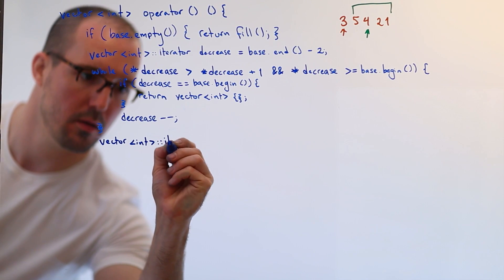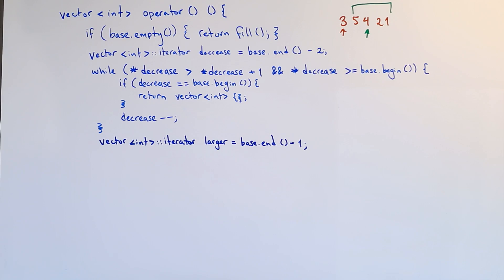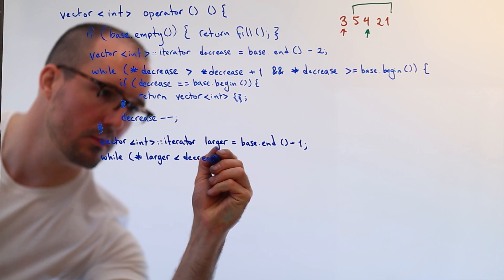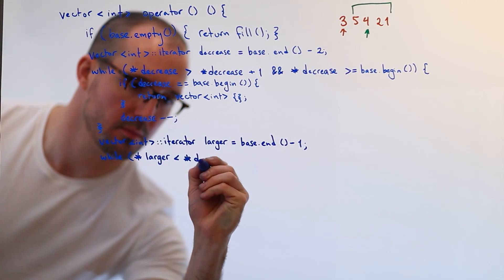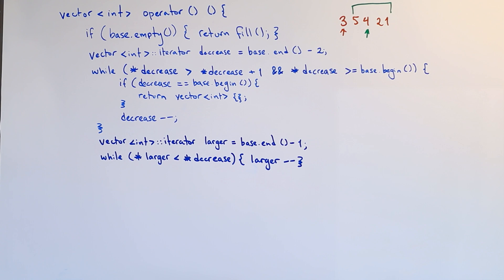So we'll start at the very right edge of the vector and we'll come leftwards. If you remember, the numbers in the tail are going to be in descending sorted order. So if we come from the right side, as soon as we find a number that's bigger, that's our winner. Because any number that's to the left of that number is going to be bigger than that number, which would mean that we would skip numbers in generating the next increment. Once we finish this loop, we know that larger refers to the first bigger number in the tail than the decrease number.